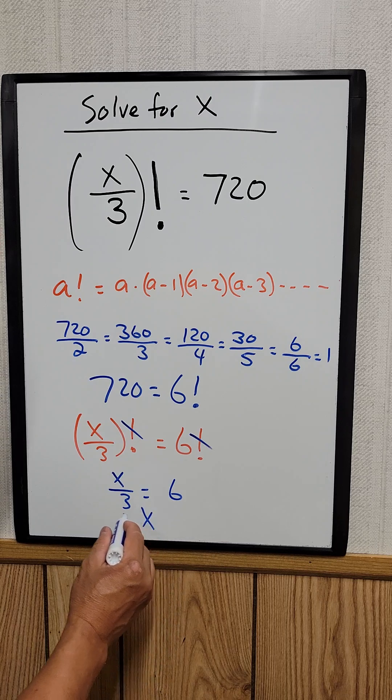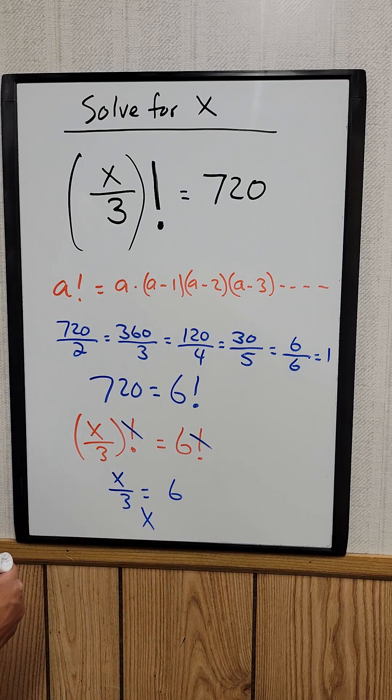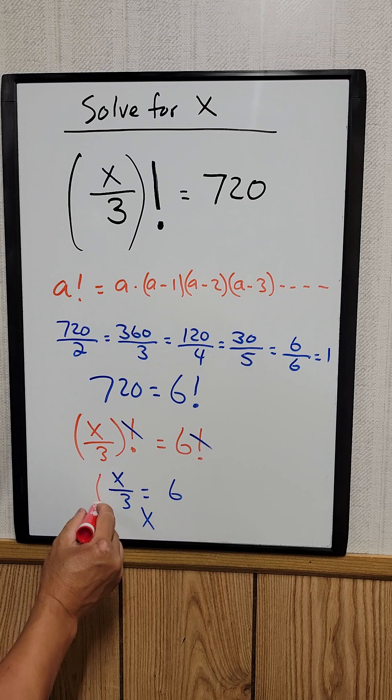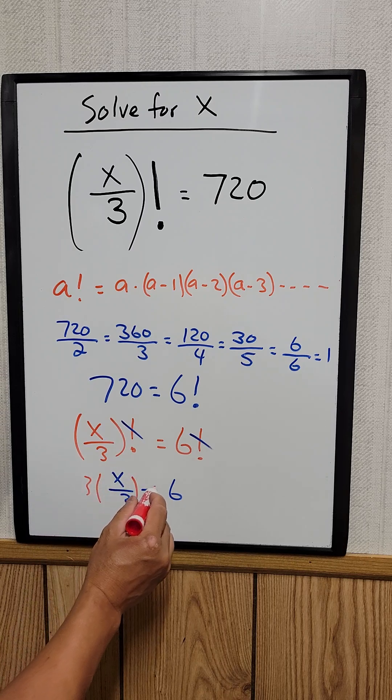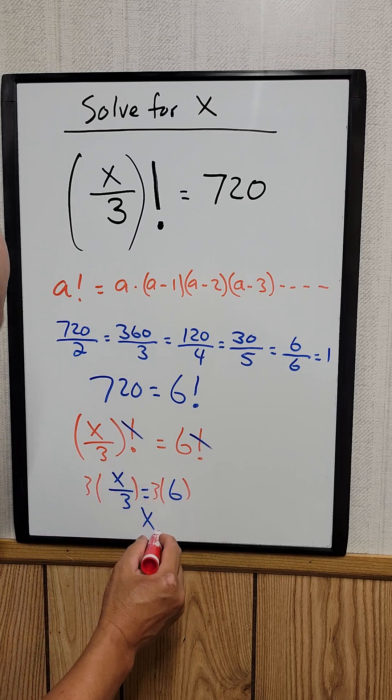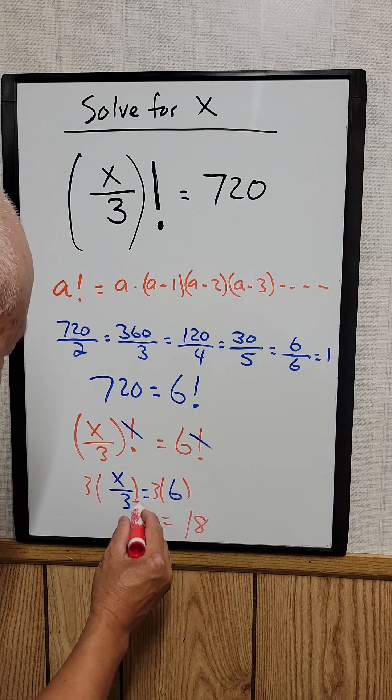So what is x equal to? Multiply both sides by 3. x equal to 18. So that's your answer right here.